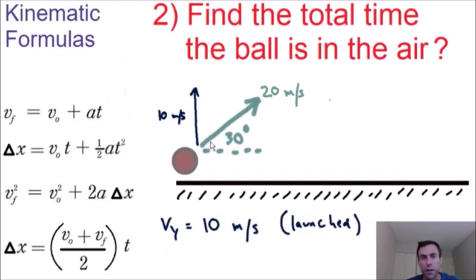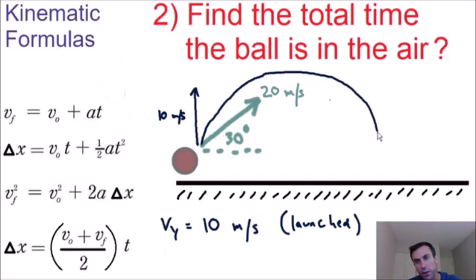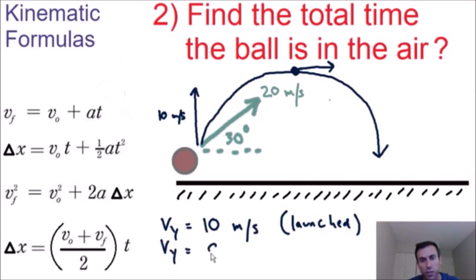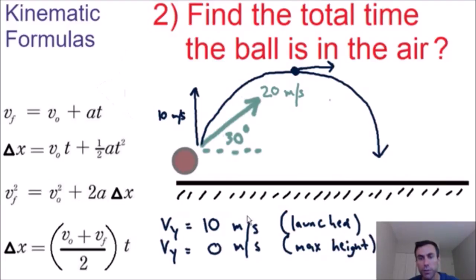The ball is going to take a parabolic path and eventually hit the ground. We know that at the max height the vertical component is equal to zero, because at max height the ball is moving to the right but not moving up or down. So the velocity in the y direction is equal to zero meters per second at the max height.